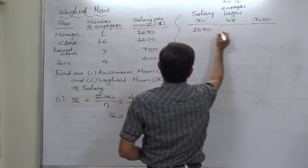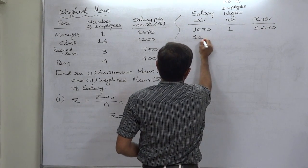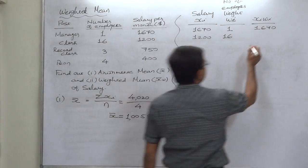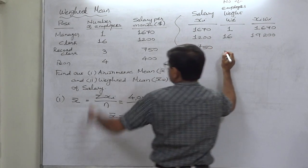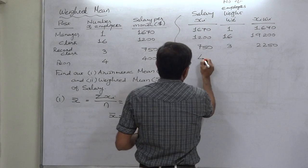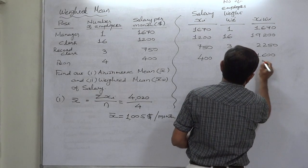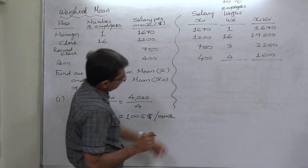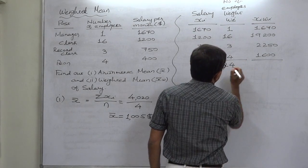1670 times 1 person, total amount 1670. 1200, total number of persons 16, so total amount will be 19,200. 750 is paid to 3 persons, so total amount is 2250. 400 is paid to 4 peons, so total amount is 1600. Now get the summation of these two columns.